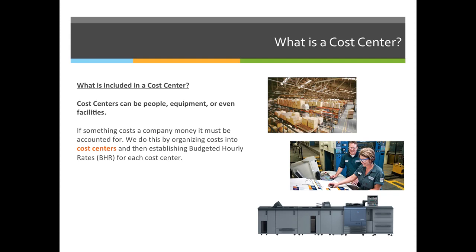We might have a budgeted hourly rate for a printing press, but we can't simply charge for the cost of the maintenance and the mortgage on the press. If a company wants to print 10,000 flyers, we charge them a run time on that press. The budgeted hourly rate incorporates the press, the pressman's salary, the pre-press person who prepped the image, the estimator who quoted the job, and the receptionist who answered the phone — much more than just the actual item we're looking at.